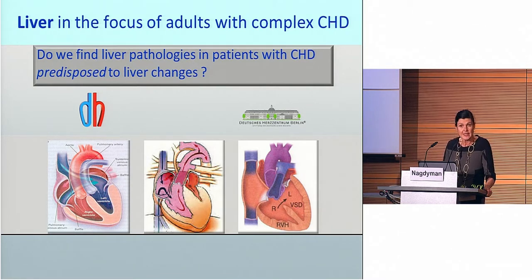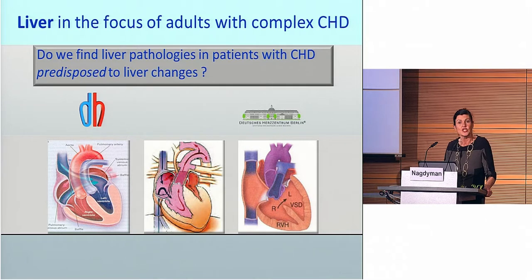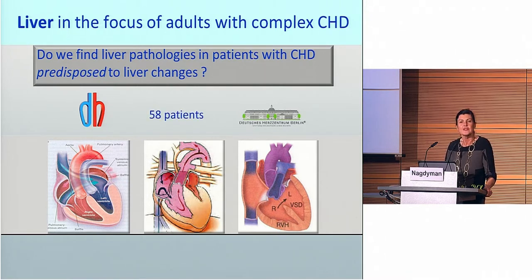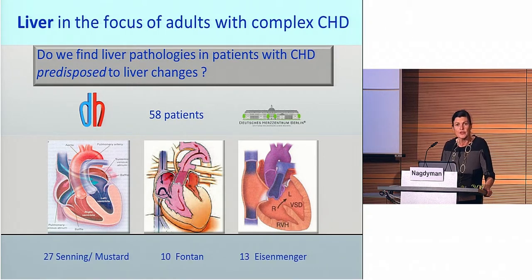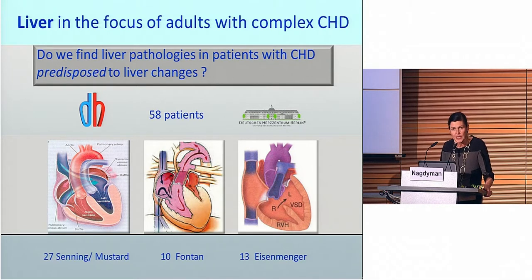As you can see here, there are no patients with pulmonary atresia, but we have patients who are cyanotic. We had 58 patients; eight patients were excluded due to missing data. The distribution was 27 patients with atrial septal operation — Zenning-Mustard patients — 10 Fontan patients, and 13 patients with Eisenmenger.